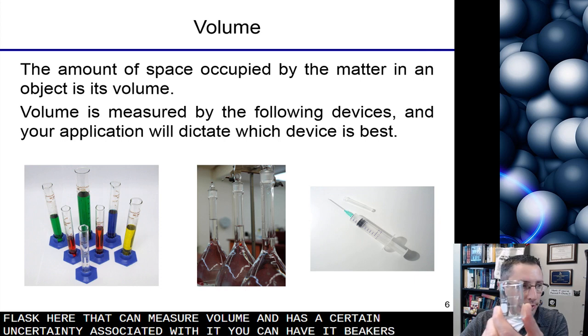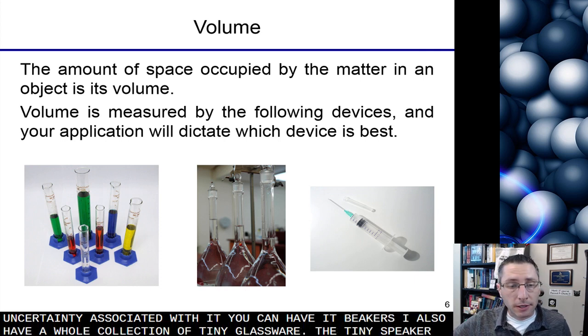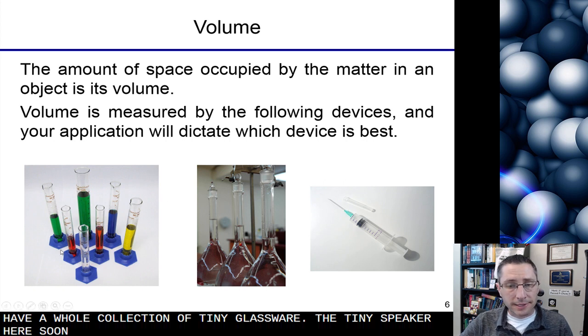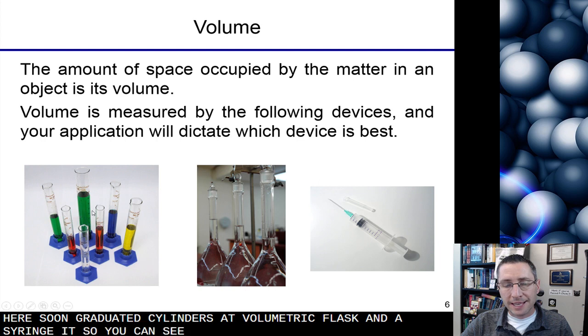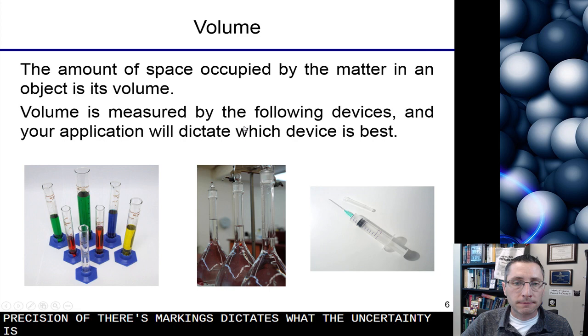You can have beakers. I also have a whole collection of tiny glassware. That's a tiny beaker. Here's shown graduated cylinders, volumetric flask, and a syringe. And so you can see these have markings on it, and the precision of those markings dictates what the uncertainty is. So in science we always have uncertainty.